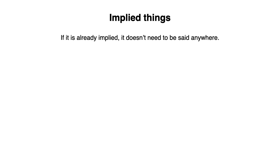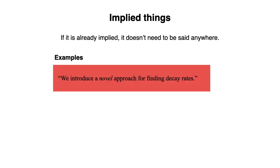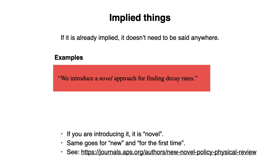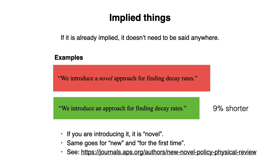Sometimes things are already implied, and therefore don't need to be said anywhere. For example, we introduce a novel approach for finding decay rates. But if you're introducing it, it is novel, and same goes for new and for the first time. In fact, some journals even have policies against using such words, for example, the physical review journals. It's shorter to instead say, we introduce an approach for finding decay rates.